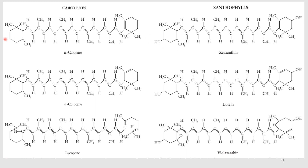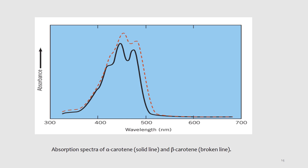Beta-carotene and xanthin structures are almost similar; the difference is the presence of two hydroxyl groups — if both are present, it is xanthin, and if both are absent, it is beta-carotene. Similarly, alpha-carotene and lutein share the same structure, except that if the two hydroxyl groups are present, it is lutein, and if absent, it is alpha-carotene. The absorption spectrum of alpha-carotene and beta-carotene shows that their absorption maximum lies in the blue region.